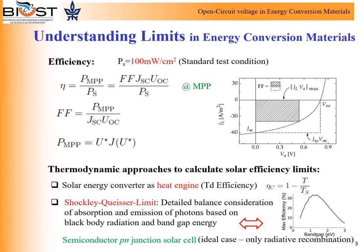The key parameter to measure the performance of energy conversion materials is given by the efficiency. In particular, the power conversion efficiency at the maximum power point is defined as the ratio of the power output from the solar cell to the input power from the sun. From the current-voltage curve, we can estimate the power output graphically as indicated in that figure. The efficiency is inherently related to further key quantities like the short-circuit current, the open-circuit voltage, and the fill factor.